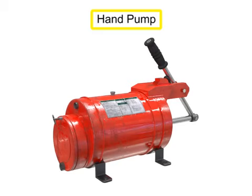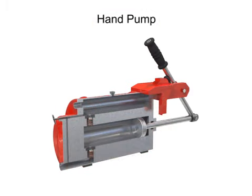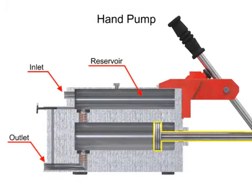Hand pumps are used when a source of power is not available or where the extra expense of a power pump isn't warranted. For example, they are used on shop presses and other portable equipment, serve as standby pumps, and serve as sources of emergency power. Hand pumps are always of piston type and are usually constructed with a piston working between two check valves.